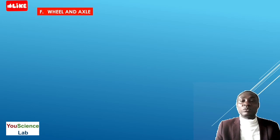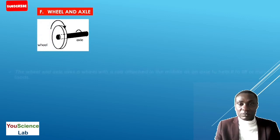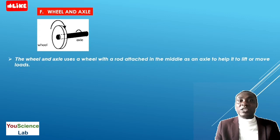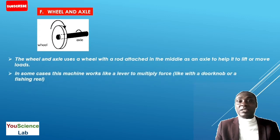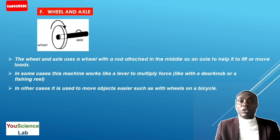Next is the wheel and axle. The wheel and axle uses a wheel with a rod attached in the middle as an axle to help lift or move loads. In some cases, the wheel and axle works like a lever to multiply force, such as in windlasses or fishing reels. In other cases, it is used to move objects more easily, such as wheels on a bicycle.